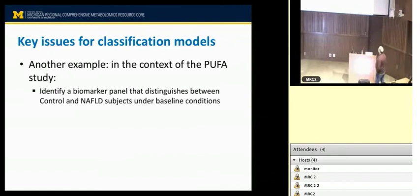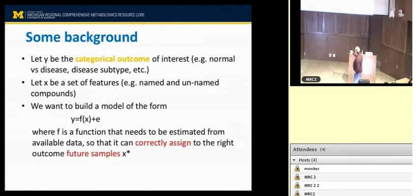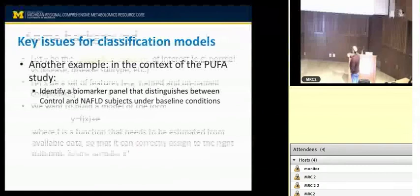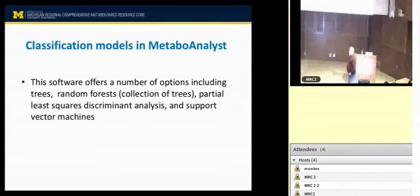Mathematically, Y is a categorical outcome — zero or one, healthy or diabetic. F is some complicated function, and X are the metabolites or other background variables. You're trying to get the best form of F from the available data, so for future samples you calculate only their X's and predict Y as accurately as possible. MetaboAnalyst has options including trees, random forest, PLS-DA, and support vector machines.